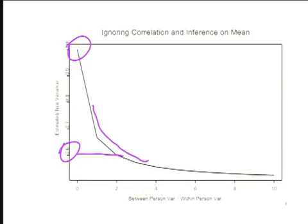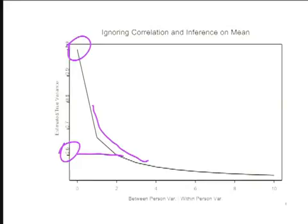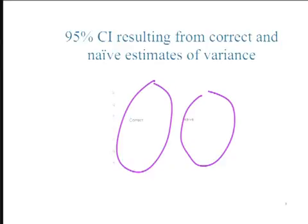We're not going to always know what the model is. There are parts of the course where we'll specify a model that generates a certain correlation, and parts where we'll estimate the mean of Y given X, or predict Y given covariates, or estimate an association adjusted for confounders — making sure correlation is accounted for in the inference. This just gives a more tangible example: I did one simulation, calculated using the correct standard error that takes account of the correlation, and one where I was naive. In one simulation it doesn't necessarily tell me the correct one is better, but I know it's unbiased, so I know it will be better on average.